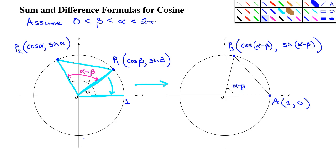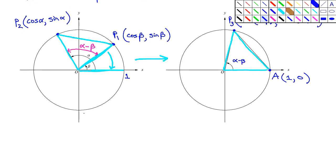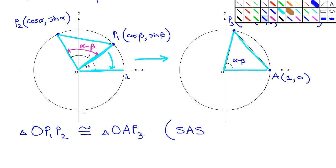Thinking about these two triangles — triangle O, P1, P2 on the left is congruent to triangle O, A, P3 on the right. The reason from geometry is Side-Angle-Side. They both have the same two sides because of the radii on the unit circle, and they clearly have the same angle alpha minus beta. The rotation from left to right did not change the angle, so we have SAS and thus congruent triangles.